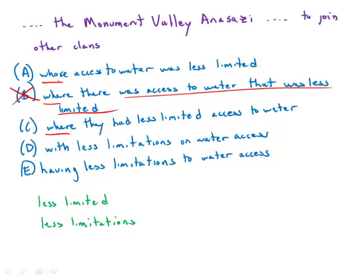C says: where they had less limited access to water. That's shorter, but the problem is the word they. What does they refer to — does it refer to the Anasazi, or does it refer to the other clans? We might be able to make a logical argument, but if it's not immediately apparent from the grammar, that's a problem. Pronouns with unclear antecedents are the kiss of death on GMAT sentence correction. If we have a pronoun and we don't know exactly what the antecedent is, that answer choice is wrong.